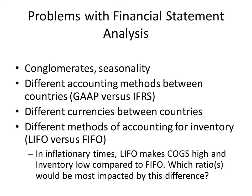Secondly, there are different accounting methods between countries. In the United States, we use the generally accepted accounting principles as set forward by FASB, or the Financial Accounting Standards Board. In pretty much the rest of the world, they use IFRS, or the International Financial Reporting Standard. These have different ways of accounting for costs and other issues, which make the numbers not comparable between companies incorporated in the United States and those incorporated elsewhere.